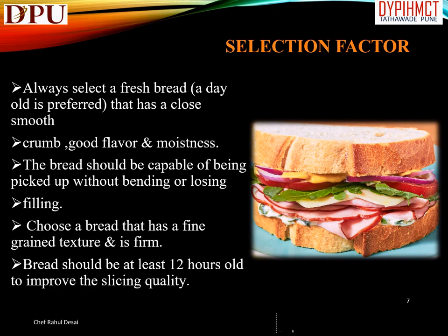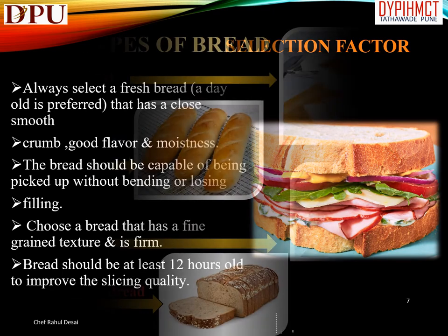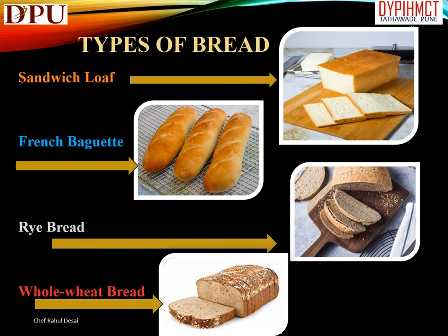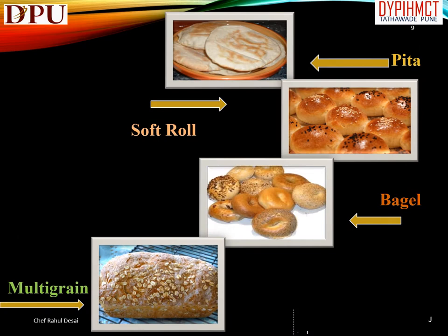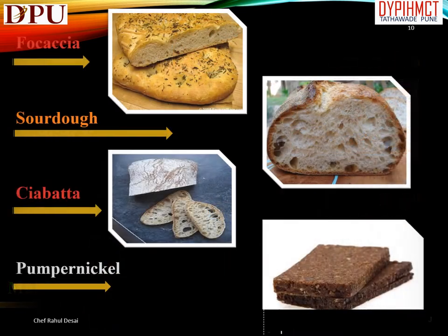The bread should be capable of being picked up without bending or losing filling. Choose a bread that has a fine grain texture and is firm. Bread should be at least 12 hours old to improve slicing quality. Types of bread include: sandwich loaf, French baguette, rye bread, whole wheat bread, pita, soft roll, bagel, multigrain, focaccia, sourdough, ciabatta, and pumpernickel.